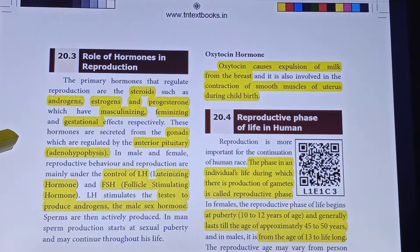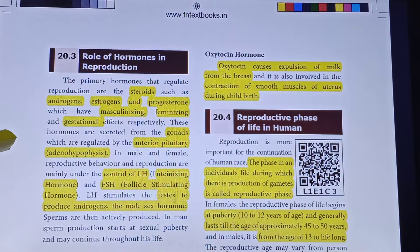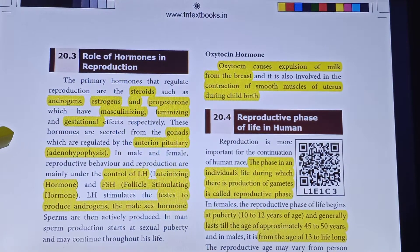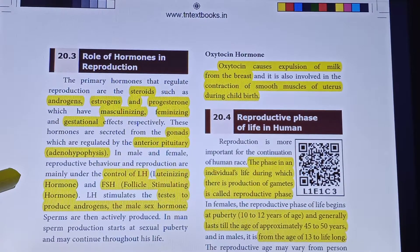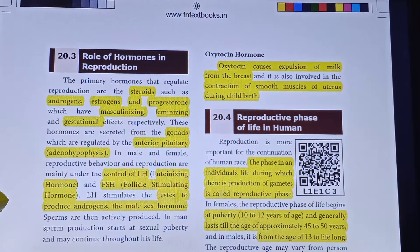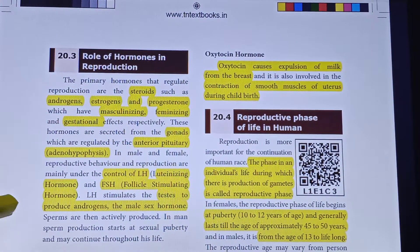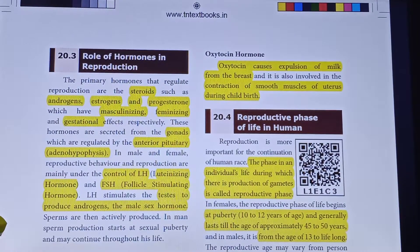The anterior lobe is called the adenohypophysis, and it secretes nearly 7 hormones. The hormones that regulate the gonads are follicle stimulating hormone (FSH) and luteinizing hormone (LH), secreted from the anterior pituitary gland. Reproduction in male and female is mainly under the control of LH (luteinizing hormone) and FSH (follicle stimulating hormone). Luteinizing hormone stimulates the testes to produce androgen, the male sex hormone.